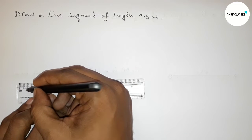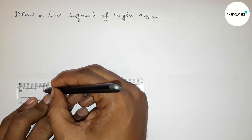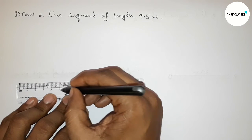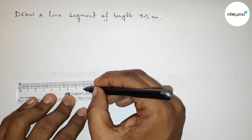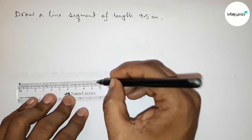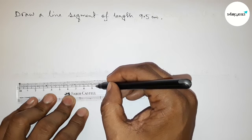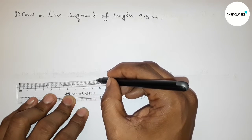So this is 1, 2, 3, 4, 5, 6, 7, 8, 9, and this is 9.5 centimeter perfectly. So first marking 9.5 centimeter, then joining the line.